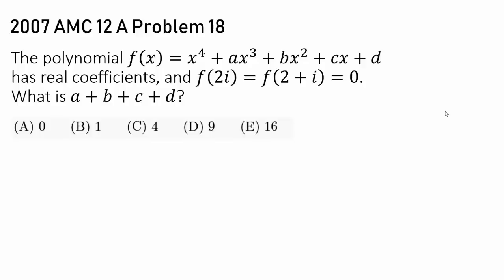The polynomial f(x) equals x to the fourth plus ax cubed plus bx squared plus cx plus d has real coefficients, and we know f(2i) equals f(2 plus i) equals 0. So we know 2i and 2 plus i are roots of this polynomial.